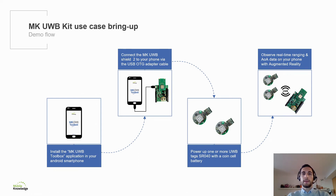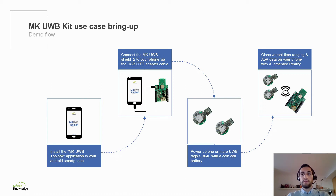To run either of the test cases, the preparation is minimal. You only need to follow these simple steps. First, install the MKUltra Wideband Toolkit app on your Android smartphone. Then, connect the MKUltra Wideband Shield to your phone via the USB on-the-go adapter cable. Then, power up one or more ultrawideband tags SR040 by inserting a coin cell into the battery compartment. Finally, launch the desired use case on your phone and observe real-time ranging and angle of arrival data, complete with an augmented reality view for locating tags in your environment. The whole process is covered in detail in the MKUltra Wideband Kit Quick Start Guide, so you can follow along as well.